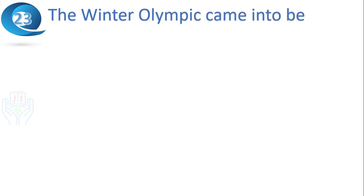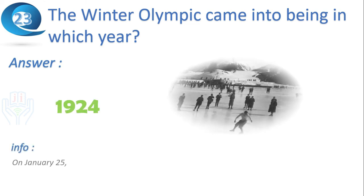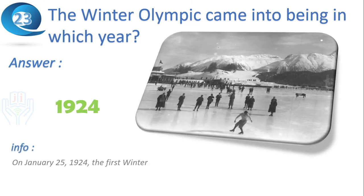Next question: the Winter Olympics came into being in which year? Answer: 1924. On January 25, 1924, the first Winter Olympics took off in style at Chamonix in the French Alps.